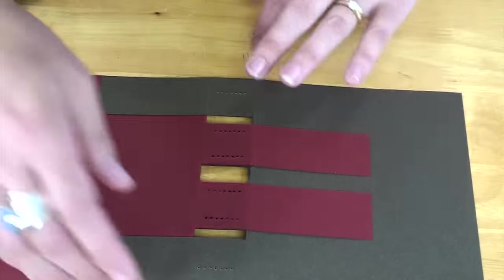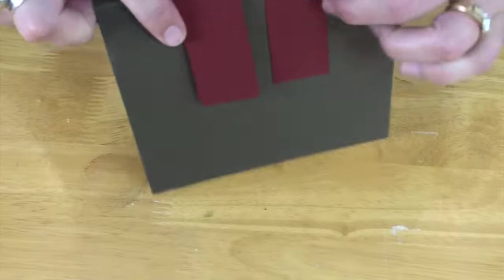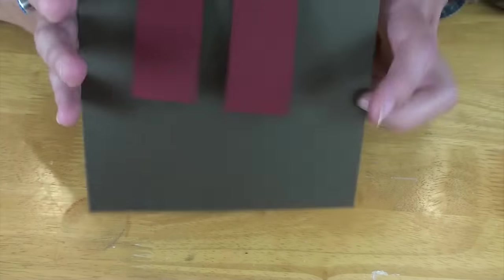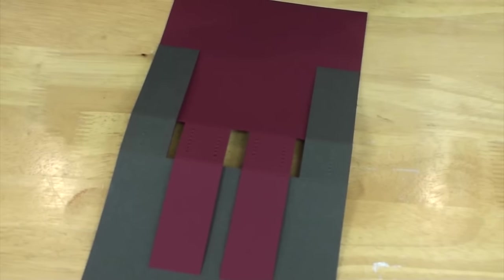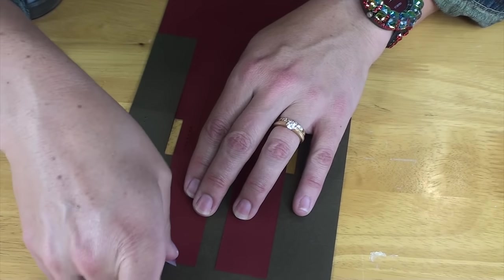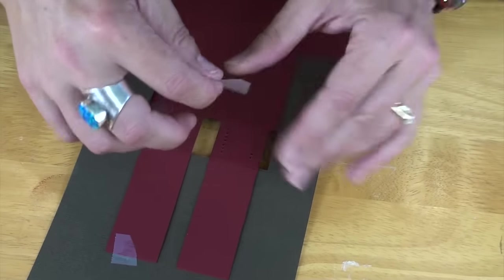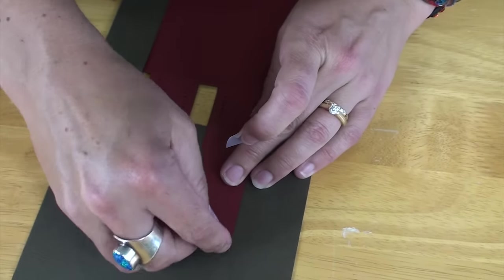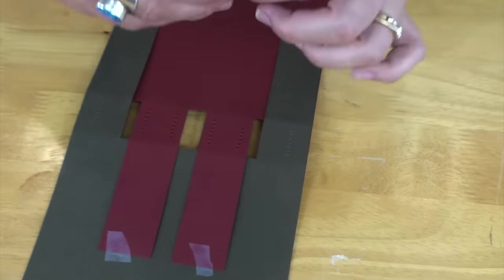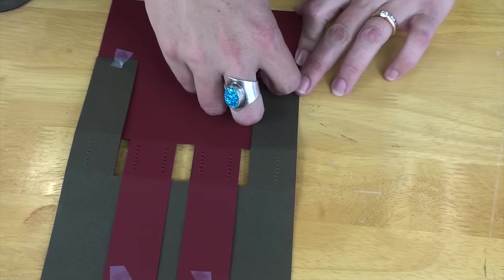If you want, you can do that on the front side as well. I didn't, but let's just tack these down with a tiny little piece. We want to be able to remove it, but that way it won't be flopping all over the place when we're trying to see what we're doing.